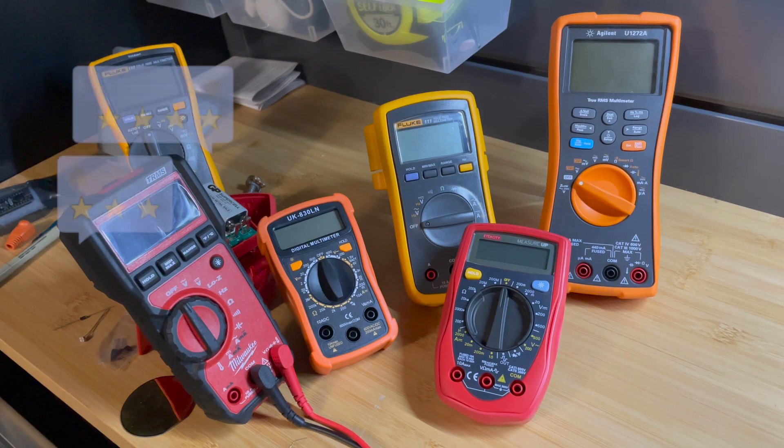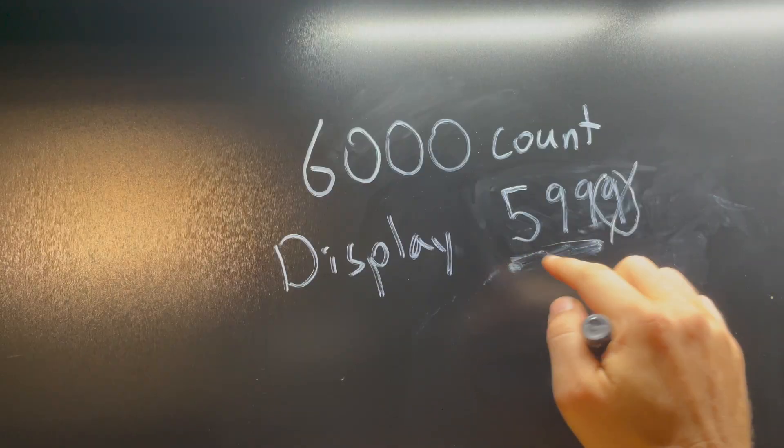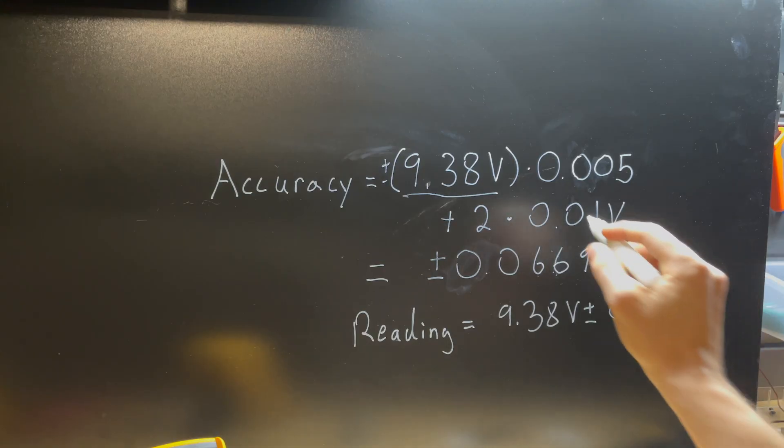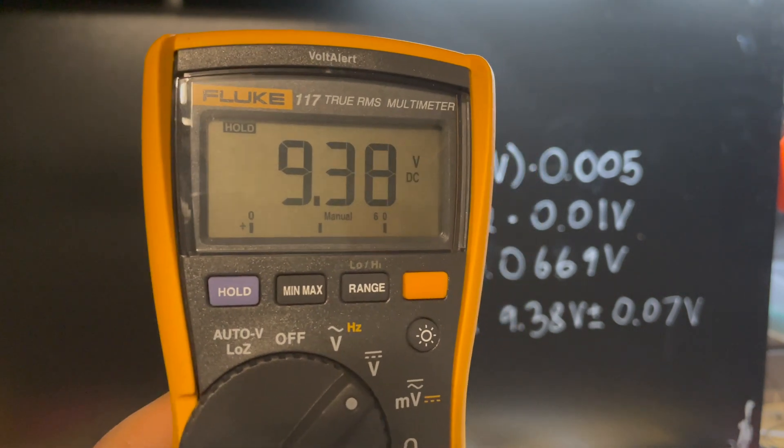In a previous video when I was talking about different types of considerations when buying a multimeter, we looked at the counts of the meter and how that can impact the accuracy of your meter. Now with the Fluke 117, that's a 6,000 count meter.